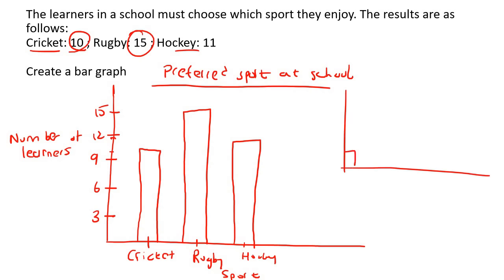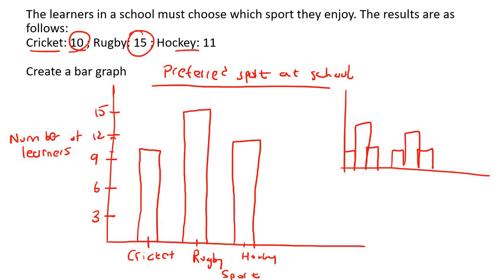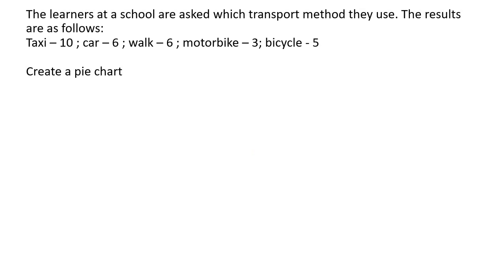We're going to do one more pie chart and one more bar graph. The learners at a school are asked which transport method they use. The results are: 10 taxi, 6 car, 6 walk, 3 motorbike, 5 bicycle.